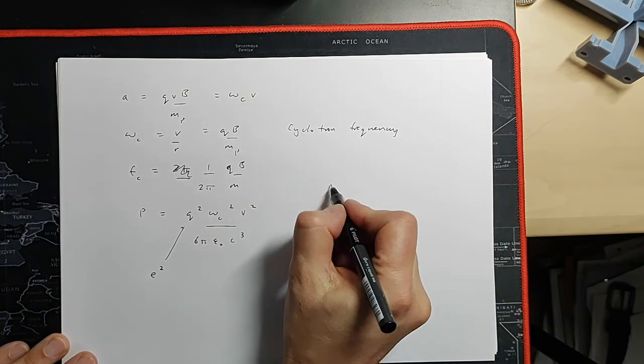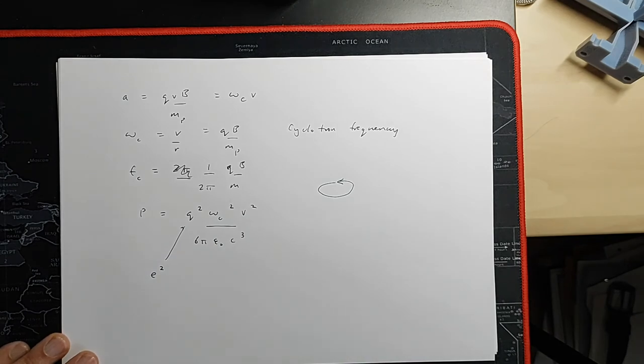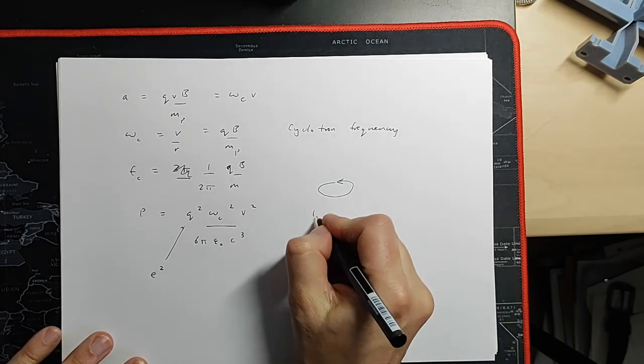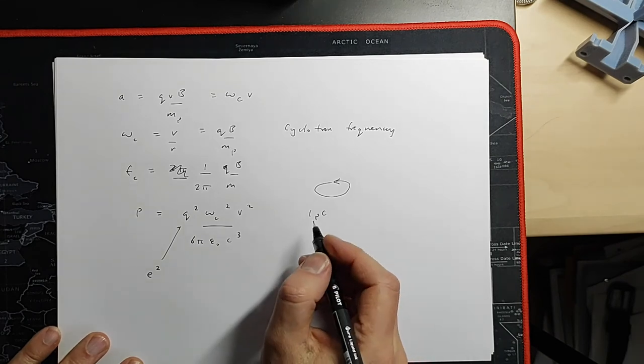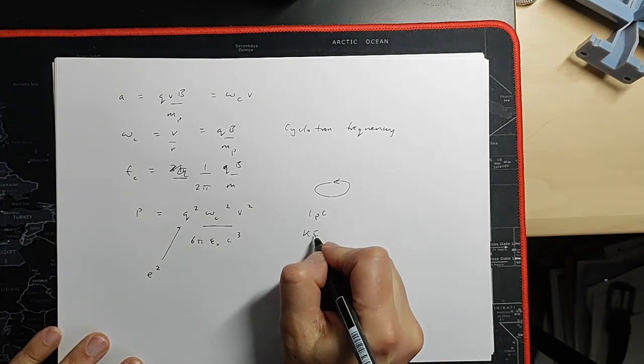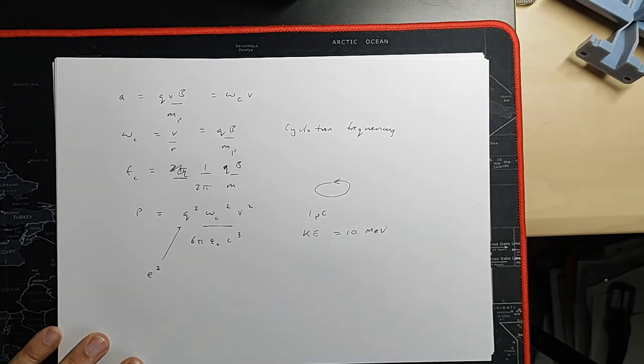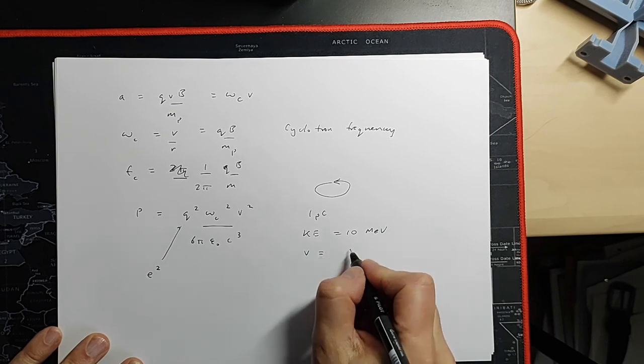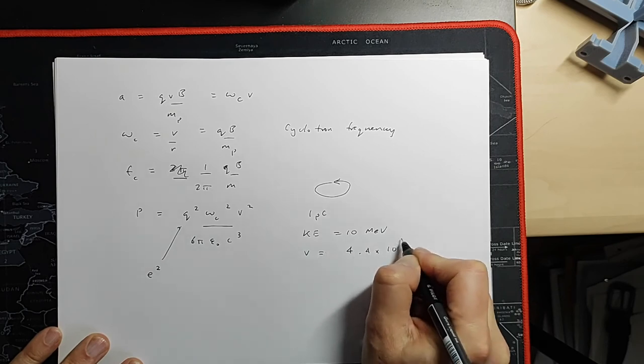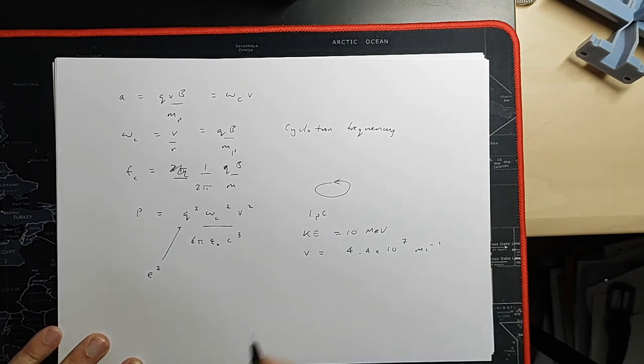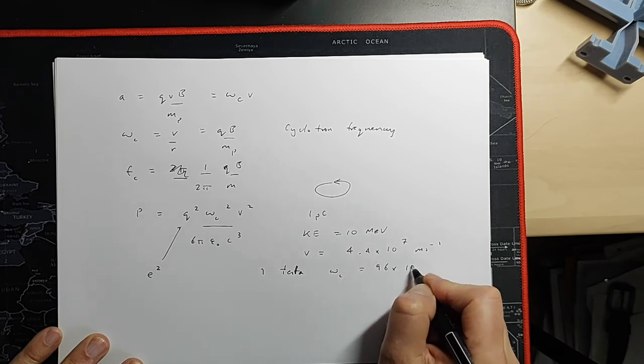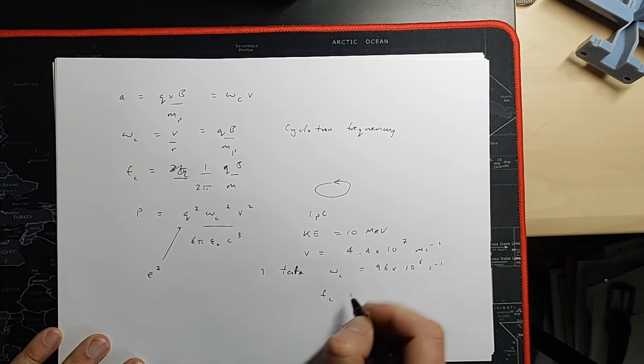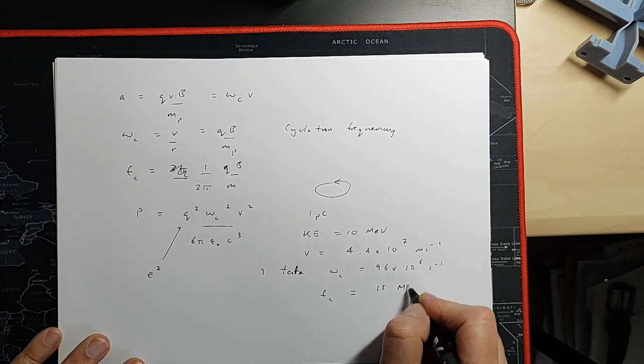Let's think about that in a practical situation. Here are my protons circulating, and we normally have much more than one proton. We might have typically one picocoulomb of protons, and you should calculate how many protons that is. One picocoulomb of protons, we imagine a typical kinetic energy of around 10 MeV, and that is equivalent to a velocity of something like 4.4 times 10 to the 7 meters per second. In a one tesla magnetic field, omega c is 96 times 10 to the 6 per second, or equivalently, the cyclotron frequency is about 15 MHz.